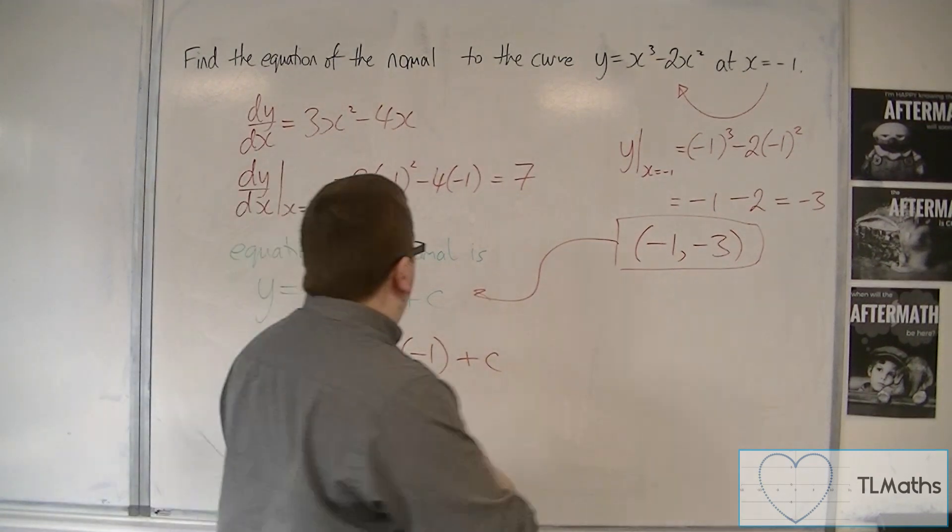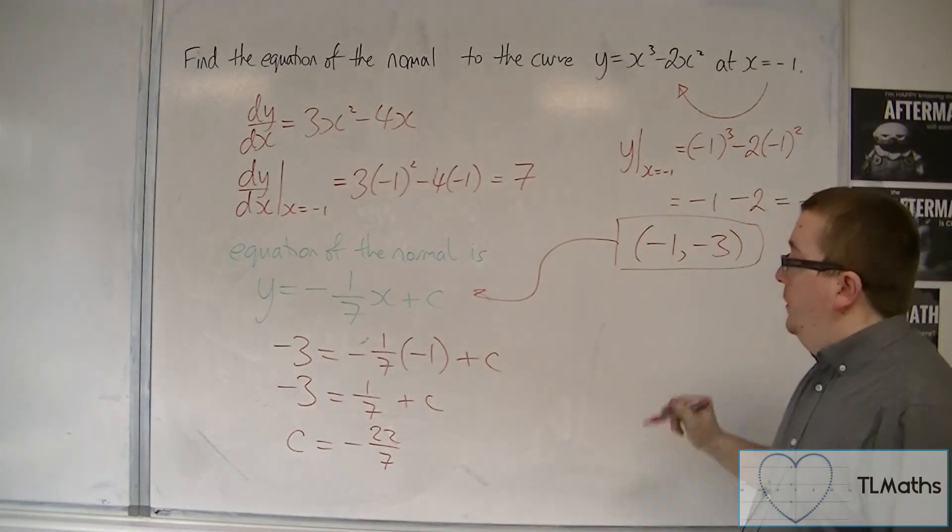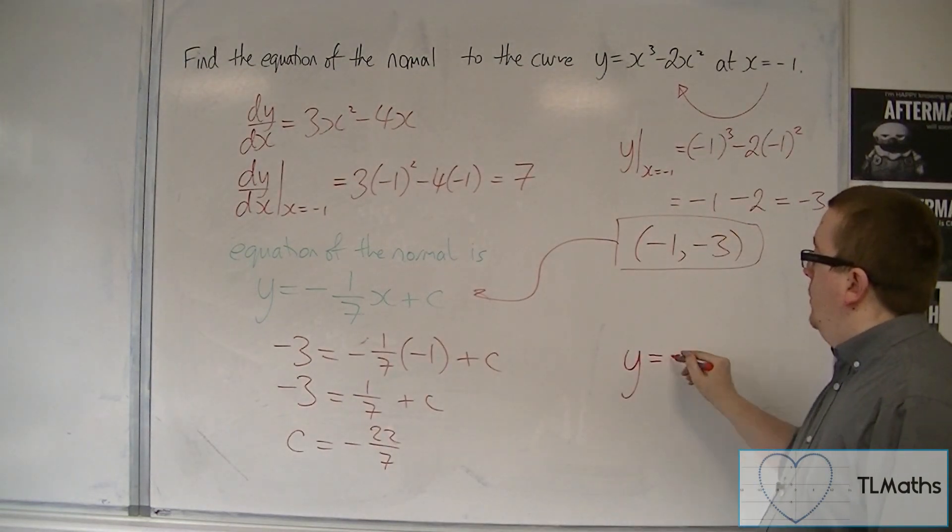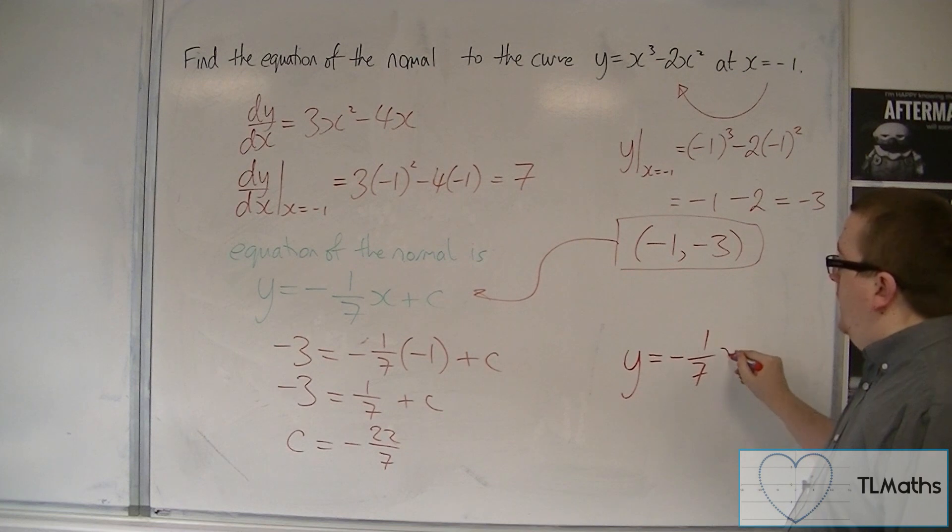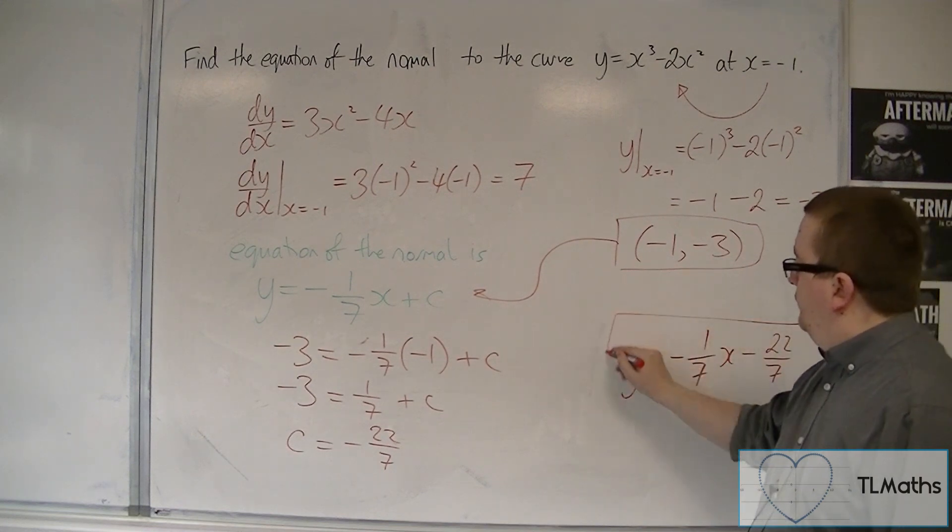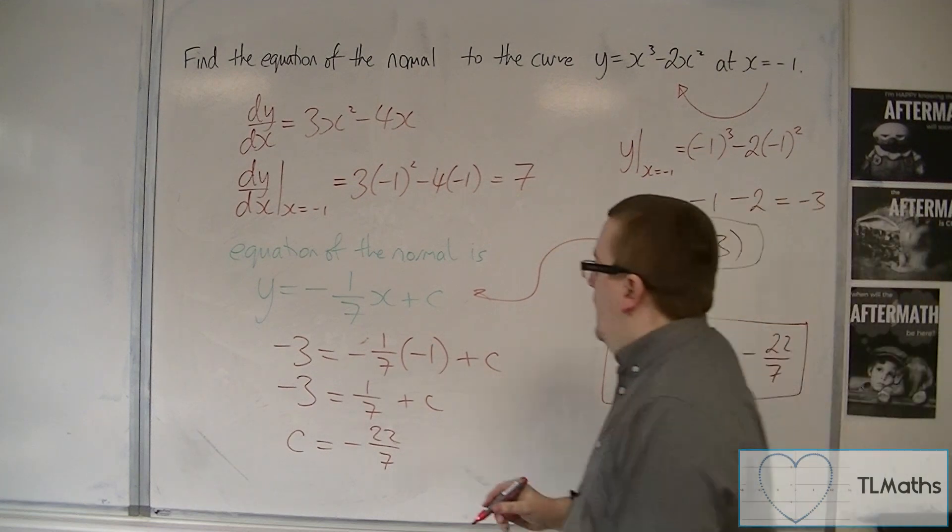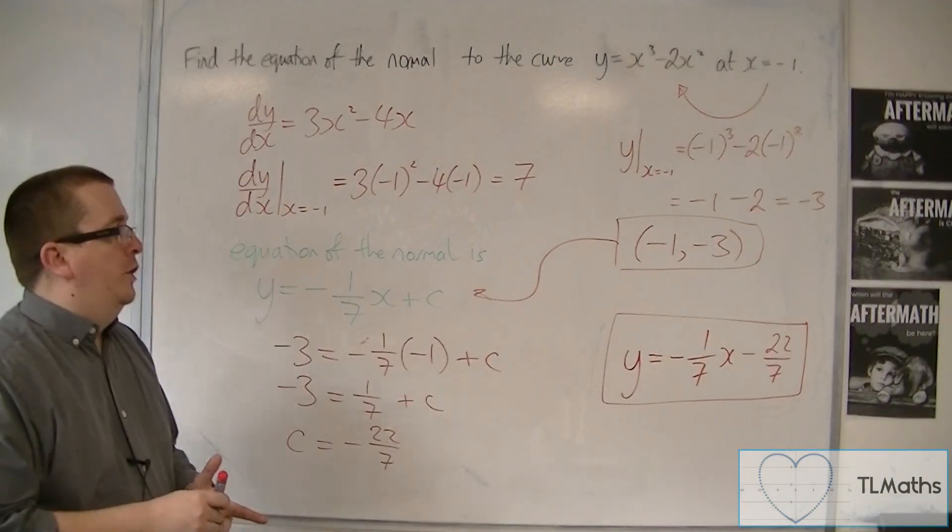And so the equation of the normal that I want is y is equal to minus 1/7th x minus 22/7ths. Okay? And that is the equation of the normal.